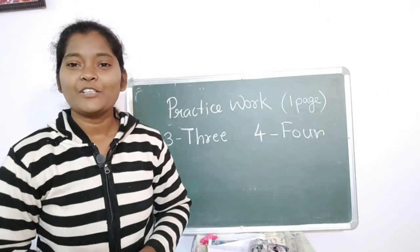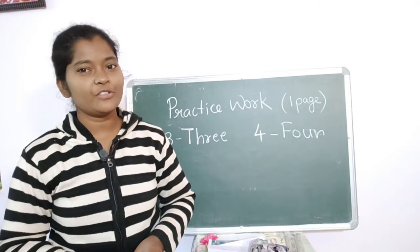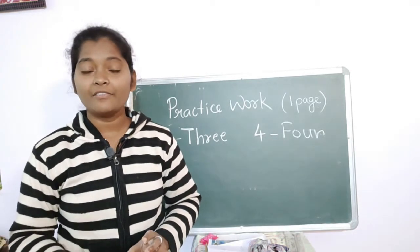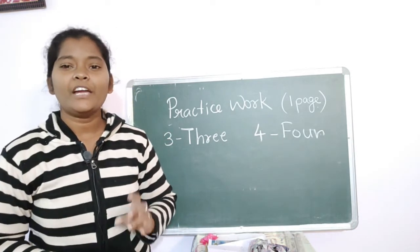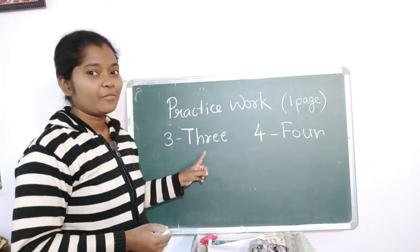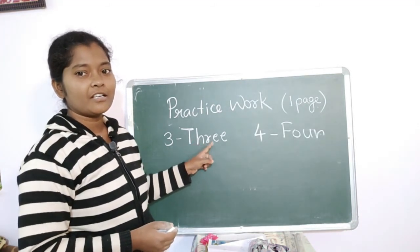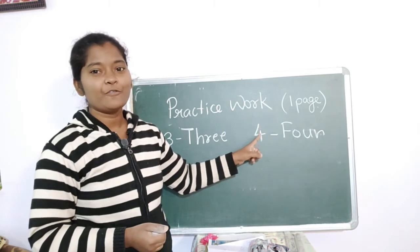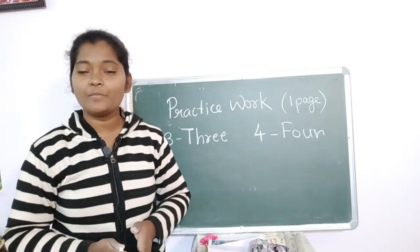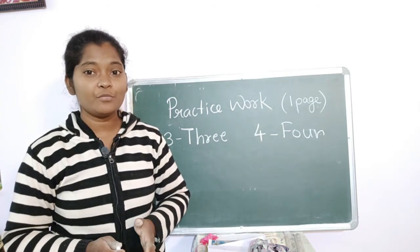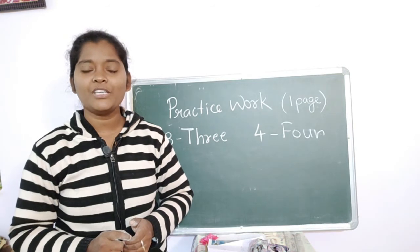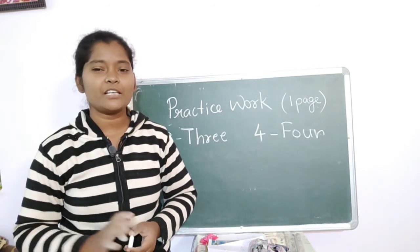Today we learned about the number names of 3 and 4, and we revised number names from 1 to 4. So my dear kids, learn well and practice well at your home. For today's practice work, you have to write one page of the number name of 3 — that is 3 dash T-H-R-E-E — 3 — and on the next page, 4 — F-O-U-R — 4. Finish all the practice work and classwork and send it to me so I can know you are learning and writing at your home. Dear students, we are going to meet on the next day. Till then, take care of yourself. Goodbye.